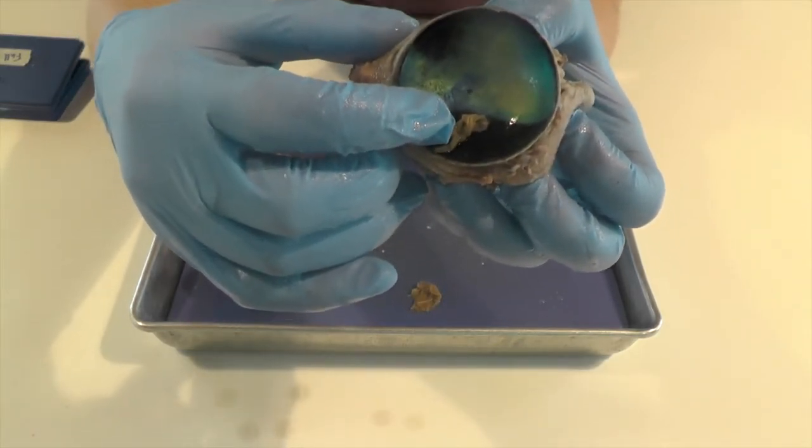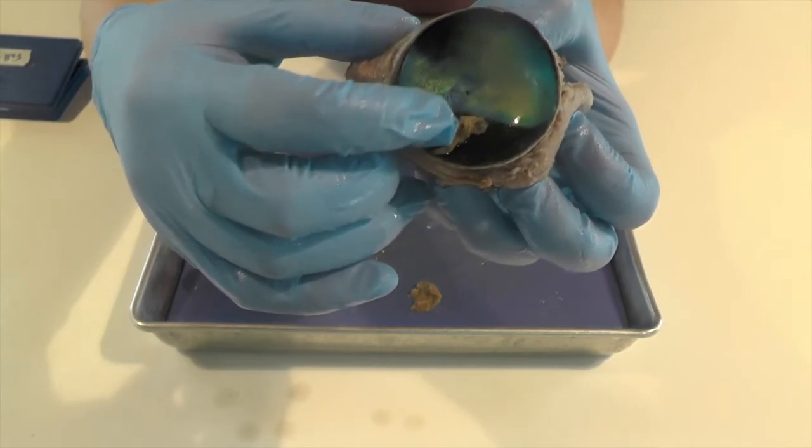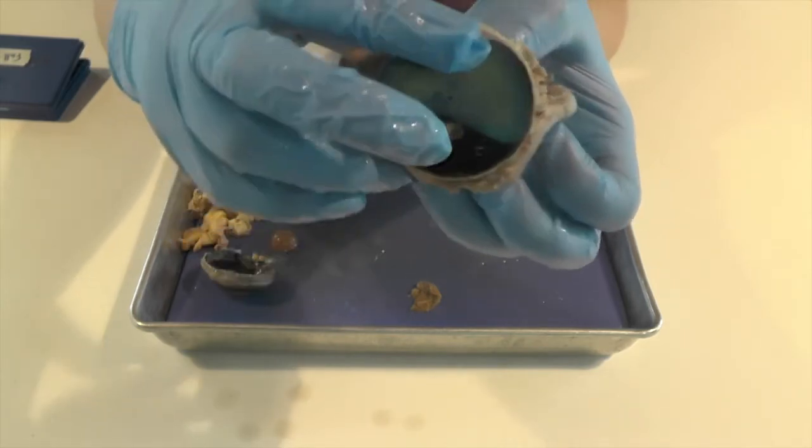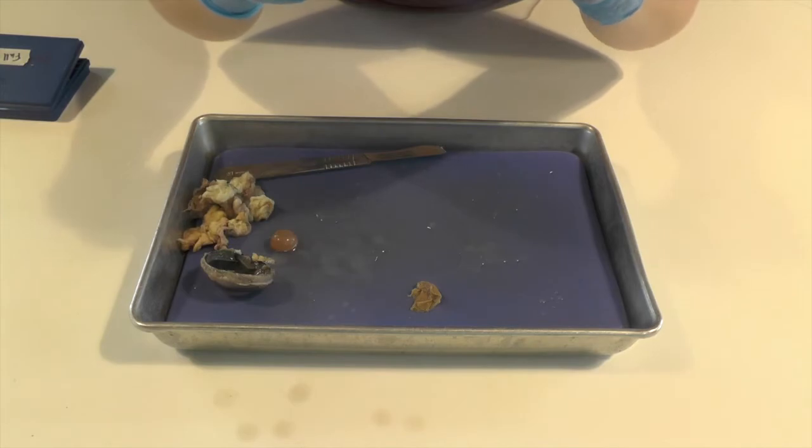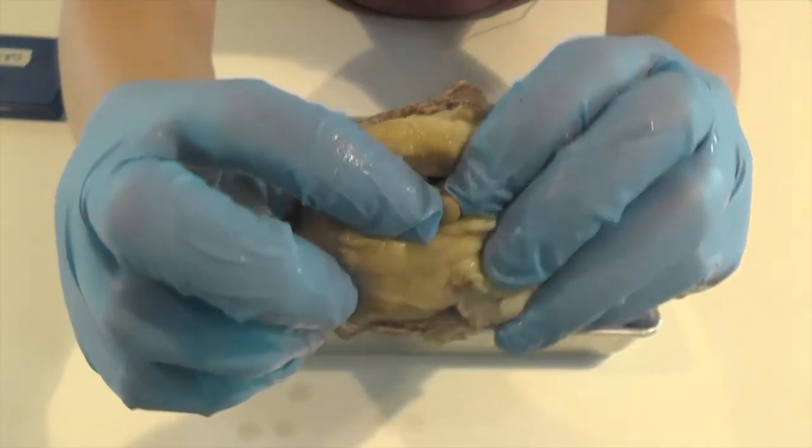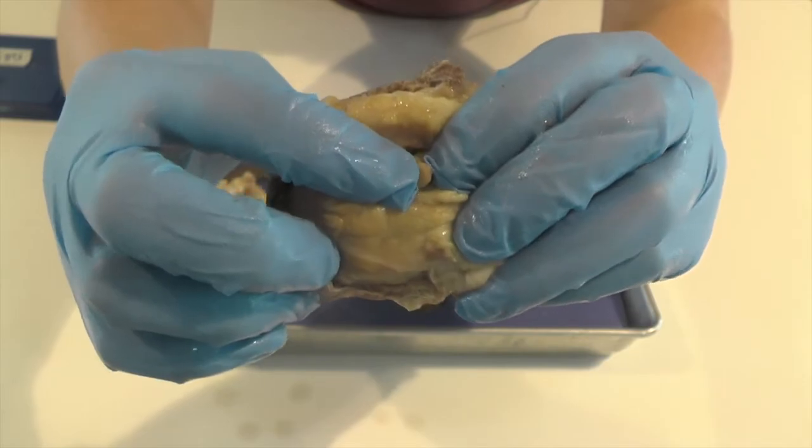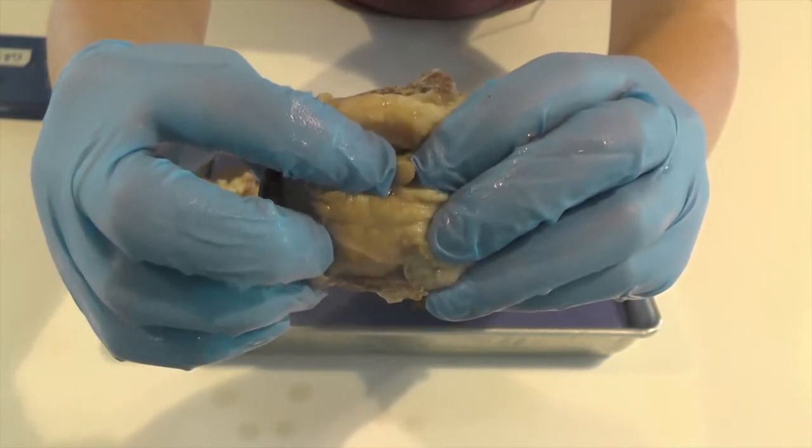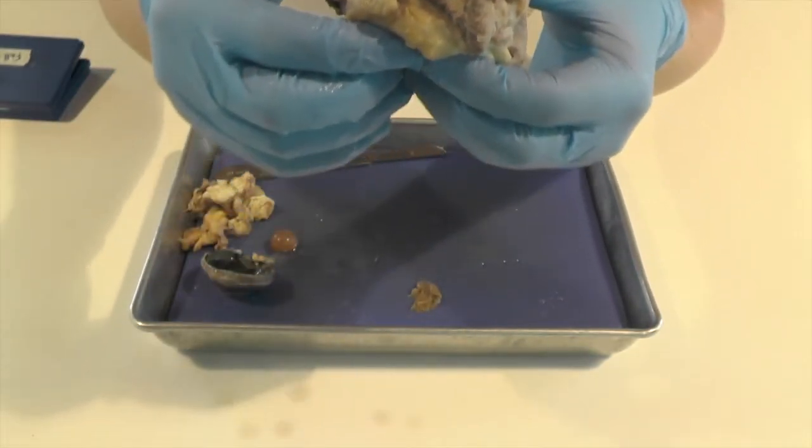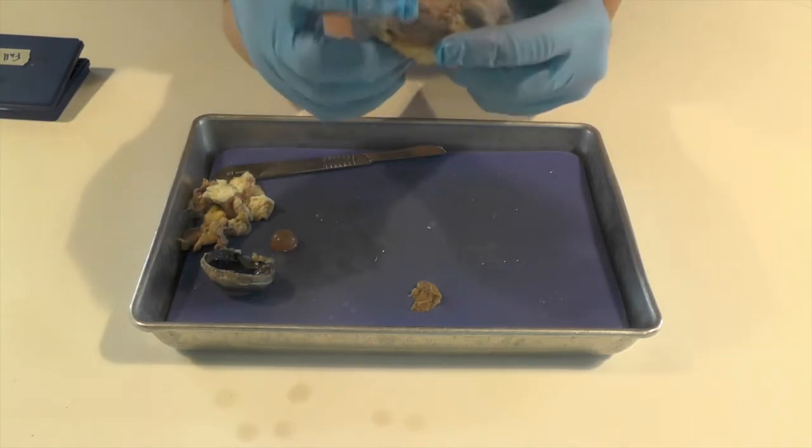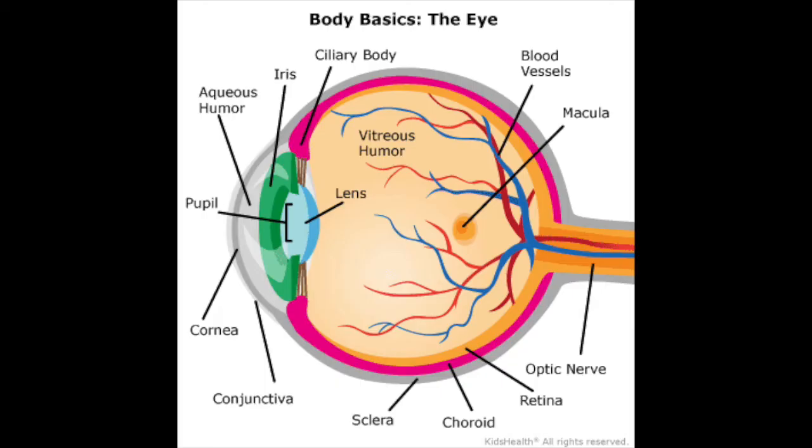So everything that you can see is sent through here, through this nerve. We can see the back of it here. Here's the back of it. But this normally, this was cut. So normally this would go all the way back into your brain, into your occipital lobe. And that's where all that information gets turned into pictures in our head.